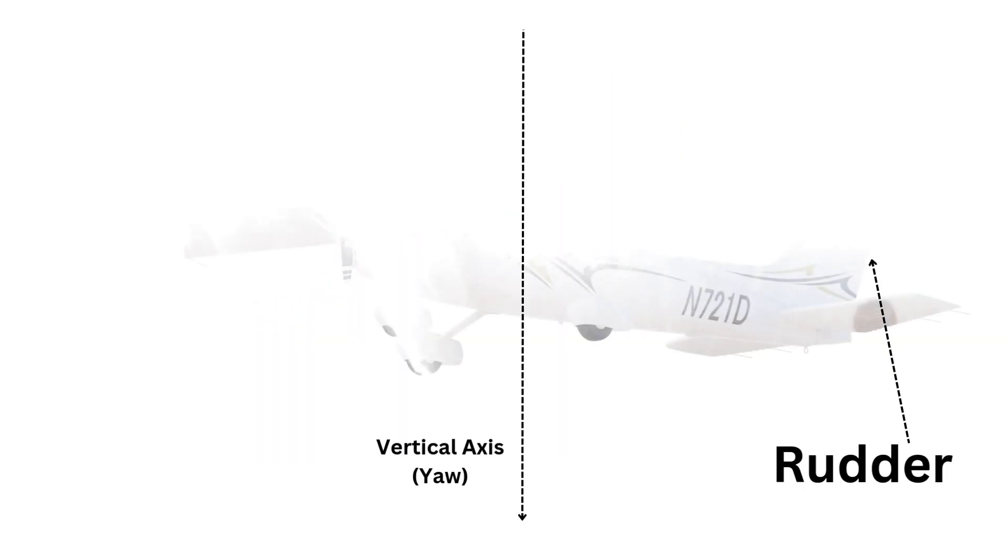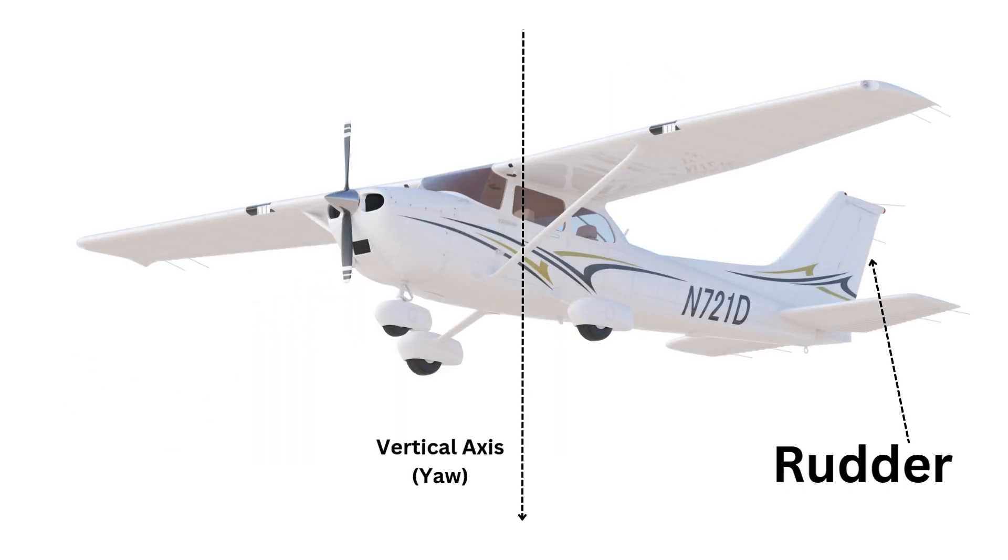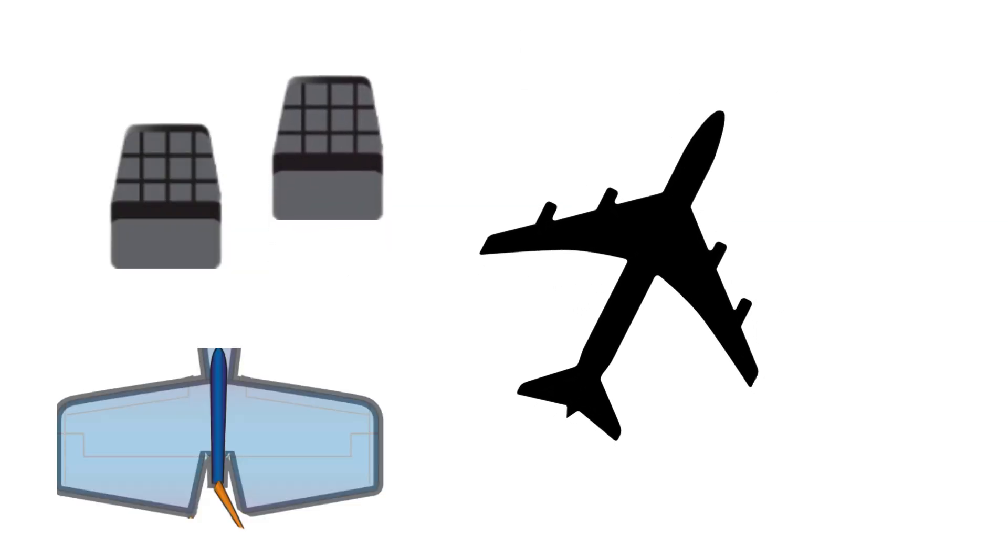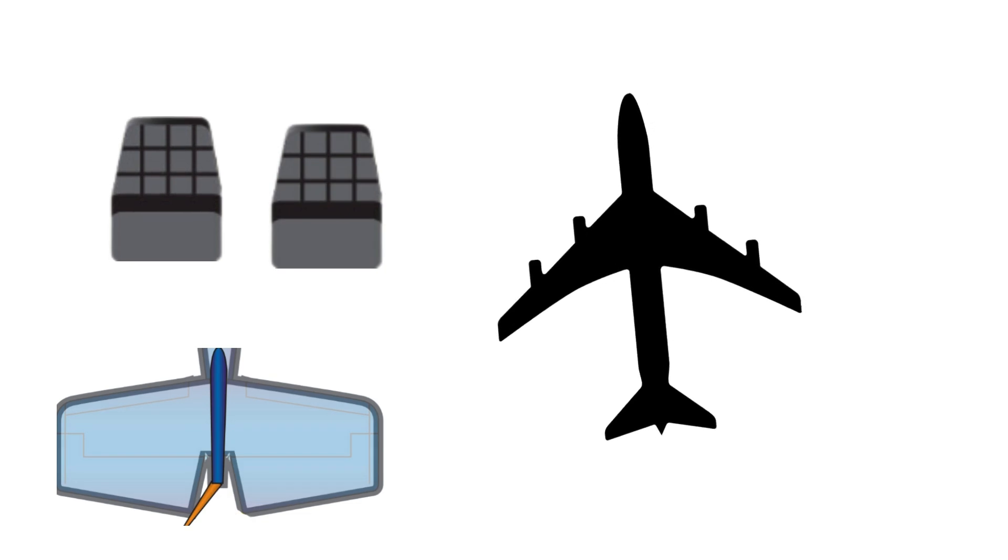The rudder pedals control the yaw of the airplane along the vertical axis. The rudder is located at the tail of the airplane on the vertical stabilizer. Pushing the right rudder pedal forward causes the rudder to deflect to the right and the airplane to yaw to the right.